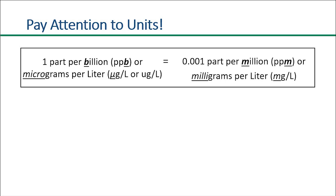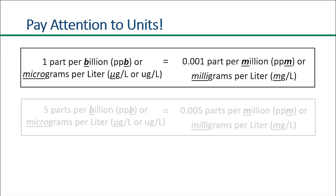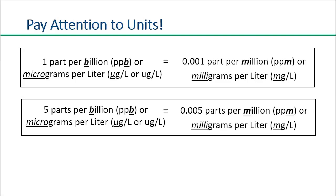One part per billion equals 0.001 parts per million. Similarly, five parts per billion is equal to 0.005 parts per million.